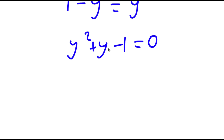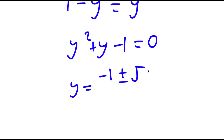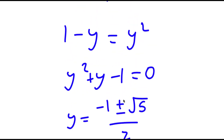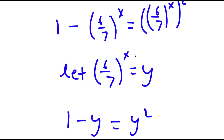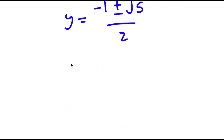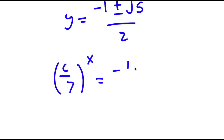This is the same thing as y squared plus y minus 1 is equal to 0. You have to use the quadratic formula to solve this. If you do, you end up getting y is equal to negative 1 plus or minus the square root of 5, all over 2. Remember we let 6 over 7 to the power of x equal y, so now I have 6 over 7 to the power of x equal to negative 1 plus the square root of 5 over 2.